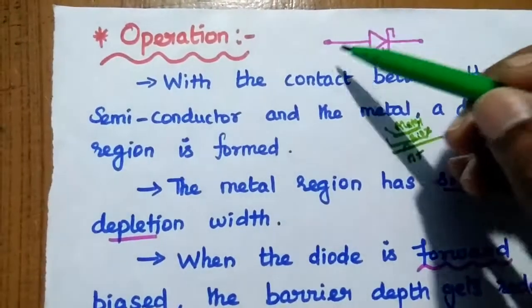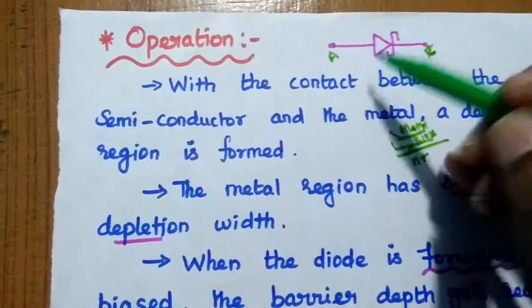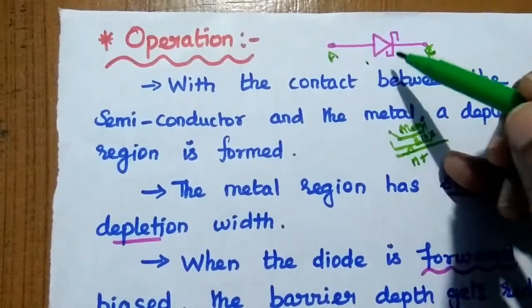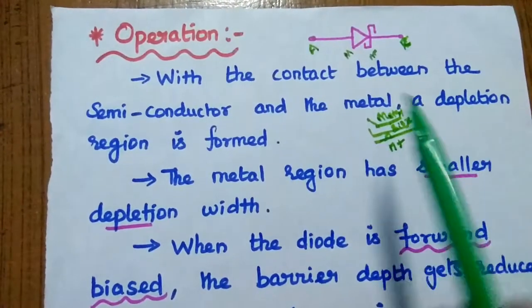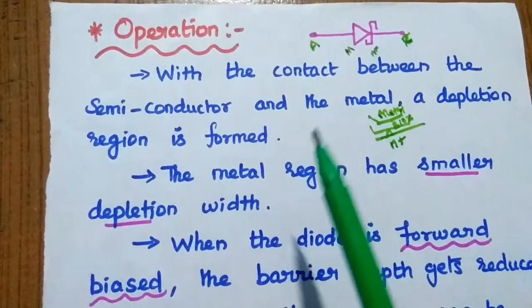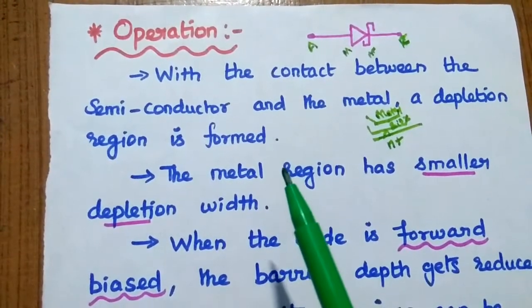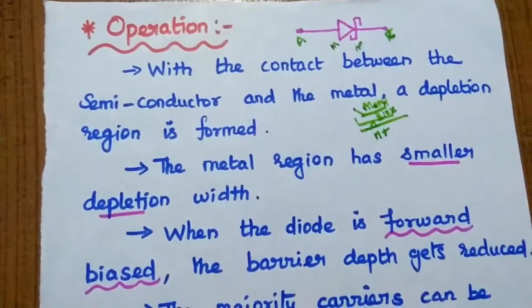Here this is the anode, this is the cathode. So here we are having the N-plus type. Here it is the metal. So how the electrons are moving from this N-plus type to this metal? For that we need to give the forward bias.